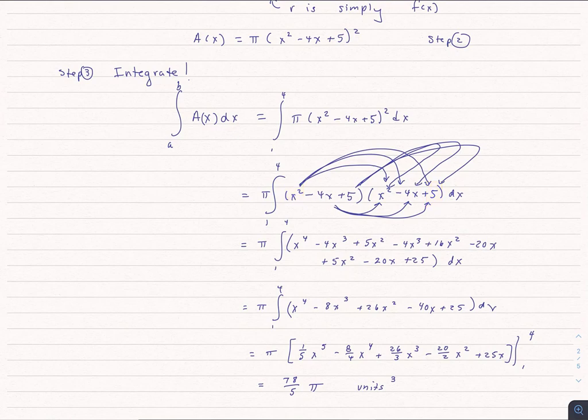Then you go to the second term, negative 4x, negative 4x times x squared, negative 4x times negative 4x, and so on. And it's kind of a crazy thing with all the arrows, but you'll do the same thing with the 5. The 5 will multiply each one of those terms. So you end up with a total of 9 terms.